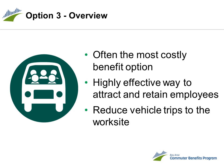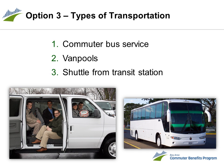Option 3 may be the most costly benefit option for an employer to provide, as providing transit is an expensive proposition. However, for employers who are willing to make the financial commitment, Option 3 can be a highly effective means to attract and retain employees and to reduce vehicle trips to the worksite. The employer can select from these types of transportation: a commuter bus service, vanpools which are a good option if there's not enough demand to justify a bus service, or a shuttle service from one or more Bay Area transit stations to the worksite.